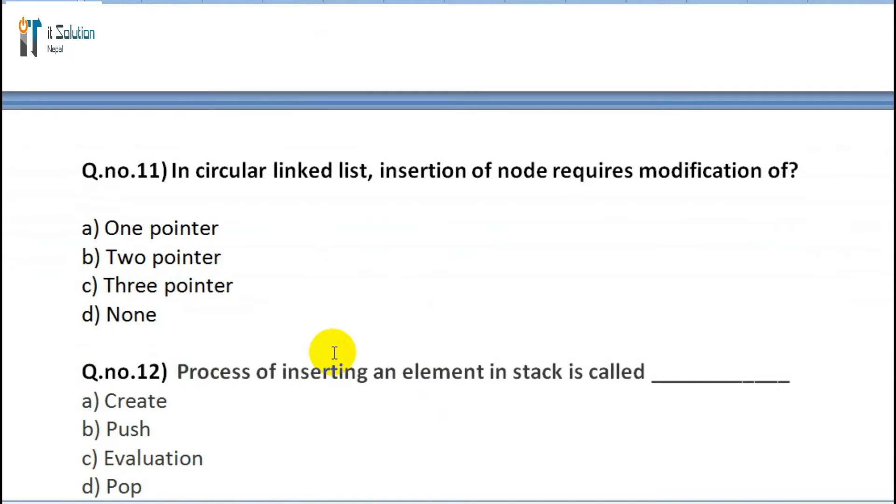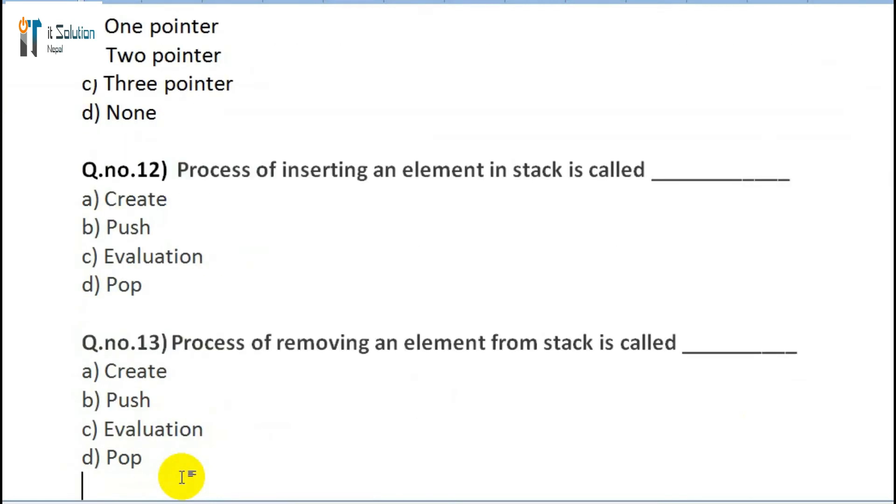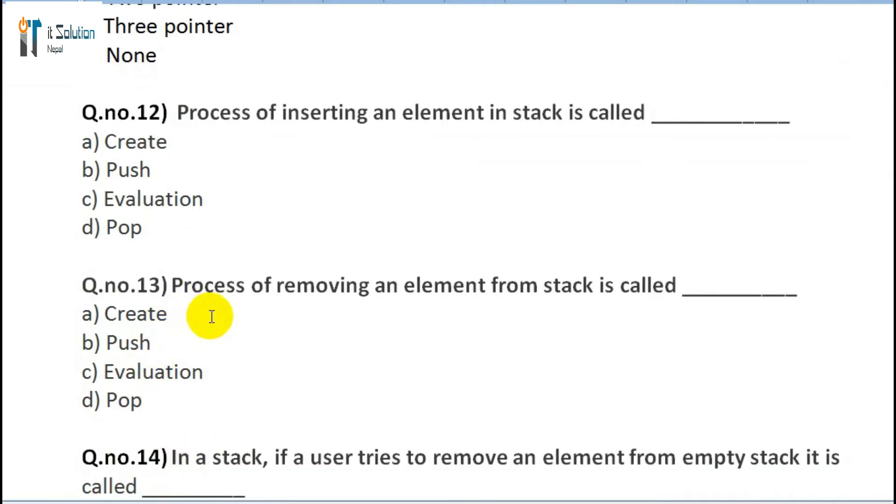Question 11: In circular linked list, insertion of a node requires modification of: A) One pointer, B) Two pointers, C) Three pointers, D) None. Question 12: Process of inserting an element in stack is called: A) Create, B) Push, C) Evaluation, D) Pop. Question 13: Process of removing an element from stack is called: A) Create, B) Push, C) Evaluation, D) Pop.